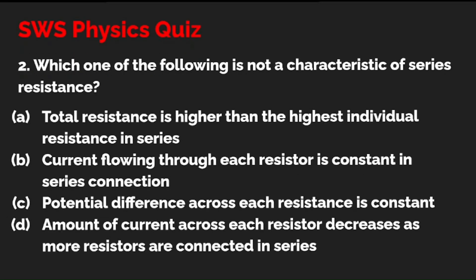Question 2: Which of the following is not a characteristic of series resistance? Option A: total resistance is higher than the highest individual resistance in series. Option B: current flowing through each resistor is constant in series connection. Option C: potential difference across each resistance is constant. Option D: amount of current across each resistor decreases as more resistors are connected in series. Please read the options carefully. The correct option is C.